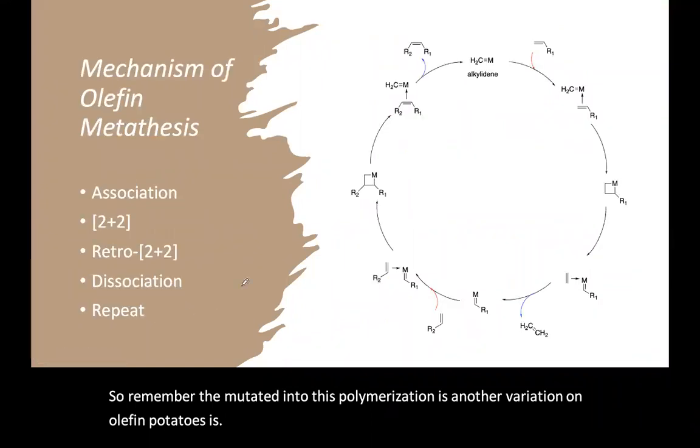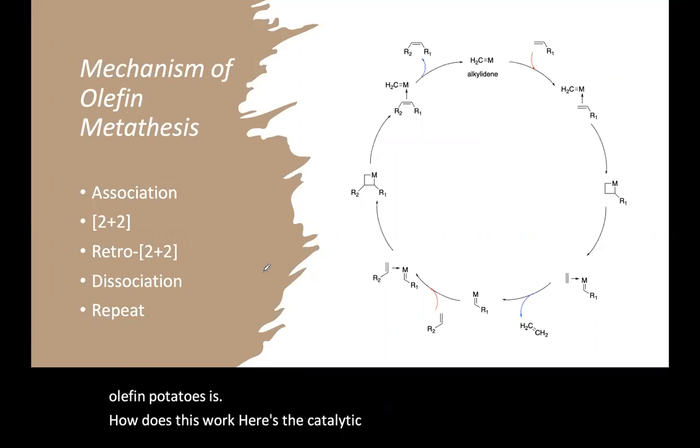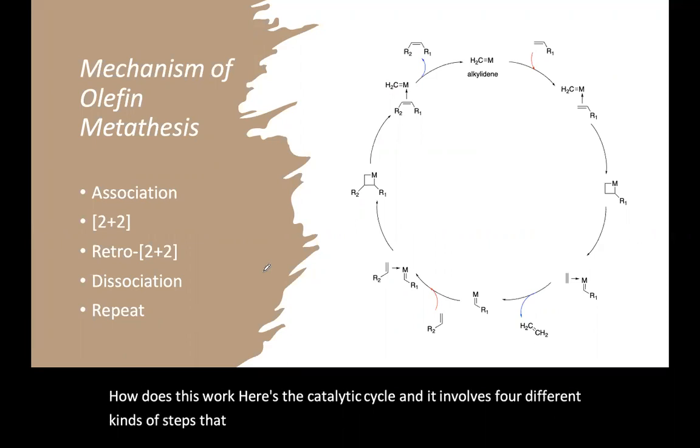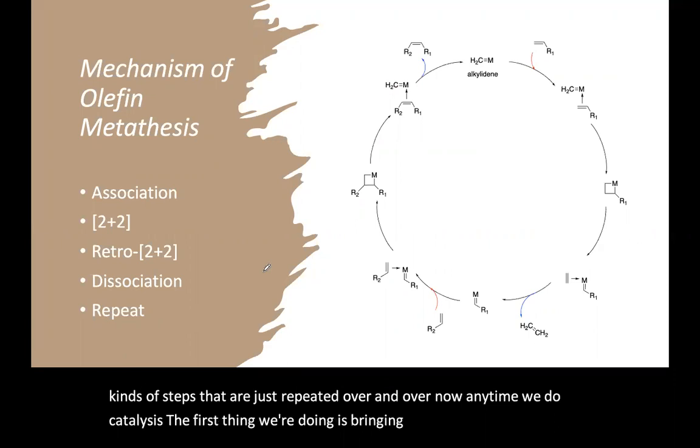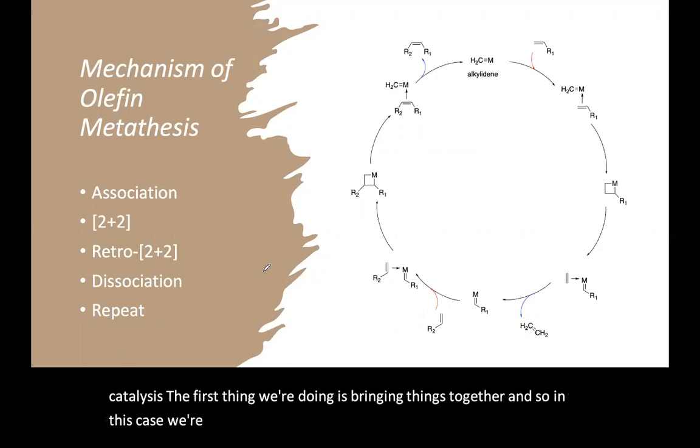So how does this work? Here's the catalytic cycle and it involves four different kinds of steps that are just repeated over and over. Now, anytime we do catalysis, the first thing we're doing is bringing things together. And so in this case, we're bringing the alkene together with the catalyst.